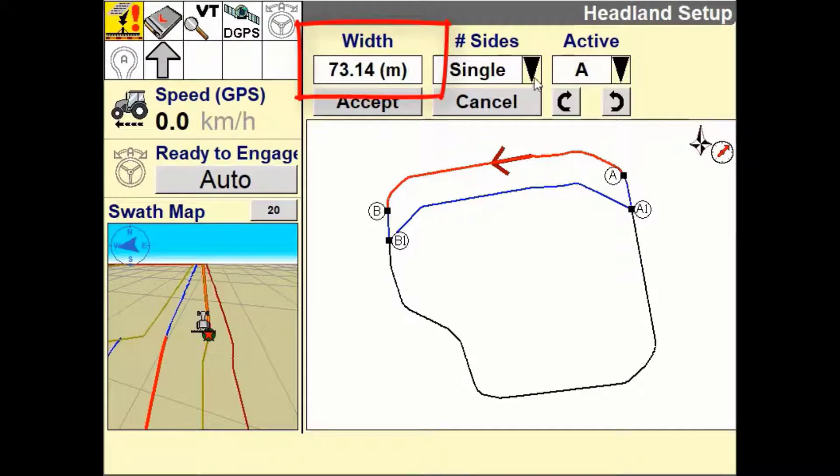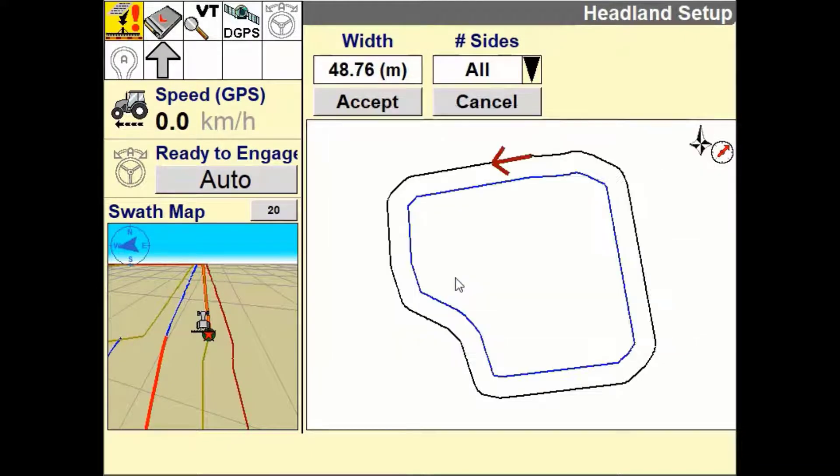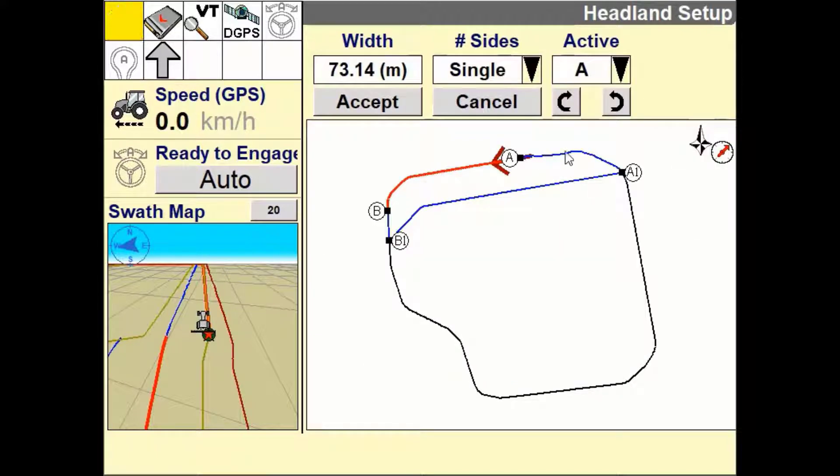There are three default options which are either one implement width, two implement widths, or three implement widths from the boundary. The other option you have is to define a custom distance from the field boundary.